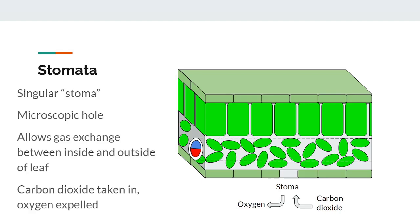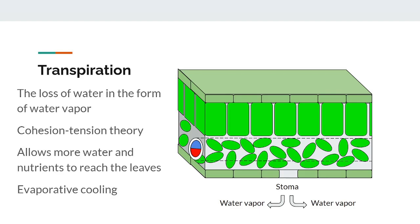When stomata are open to let in carbon dioxide, water in the leaf is able to evaporate out through the stomata in a process called transpiration. Transpiration is the loss of water in the form of water vapor, and about 97 to 99% of water absorbed by a plant is lost through transpiration. Transpiration is important because as water is lost through the leaves, more water is pulled up by the roots because of something called the cohesion-tension theory. When more water is pulled through the roots, more nutrients dissolved in that water are also being obtained by the plant. Transpiration also helps by cooling the plant through evaporative cooling, in the same way your sweat evaporating cools down your body temperature.